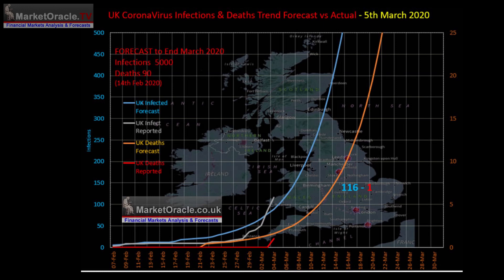UK coronavirus infected numbers are also going parabolic. The total number of infections recorded in the UK has now started to exceed my trend trajectory for the first time due to increasing community spread, which has finally prompted the government and NHS to start responding to the unfolding crisis — though it has always been reaction to events rather than proactive action. The UK should have suspended all flights from China at the end of January; instead, they continued to let infected Chinese nationals into the country.